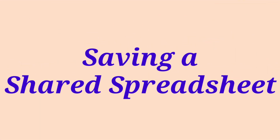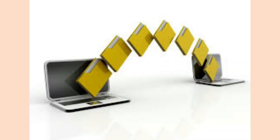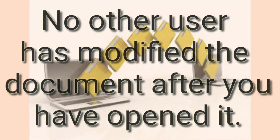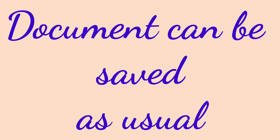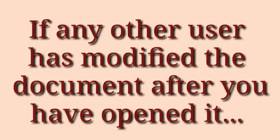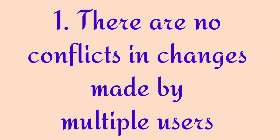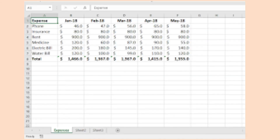Saving a shared spreadsheet: when you are one of the users of a shared document and want to save it, there may be two possibilities. The first is if no other user has modified the document after you opened it — then the document can be saved easily as usual. But if any other user has modified the document after you opened it, one of the following events can occur. The first case is when there are no conflicts among the changes made by multiple users working on the same spreadsheet.